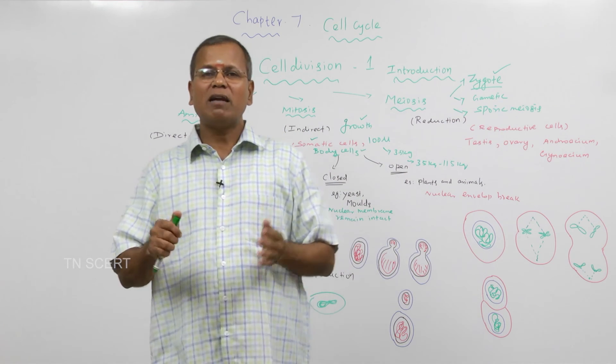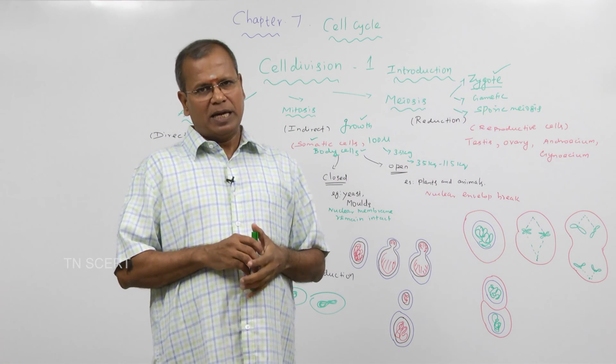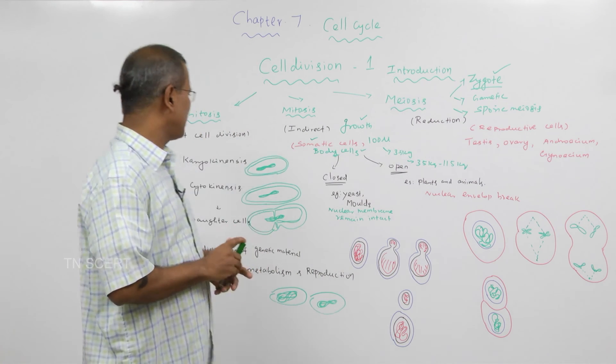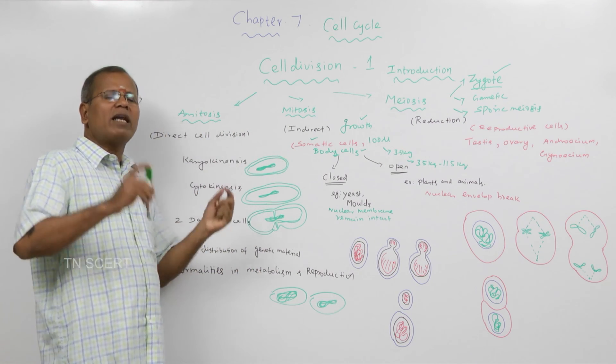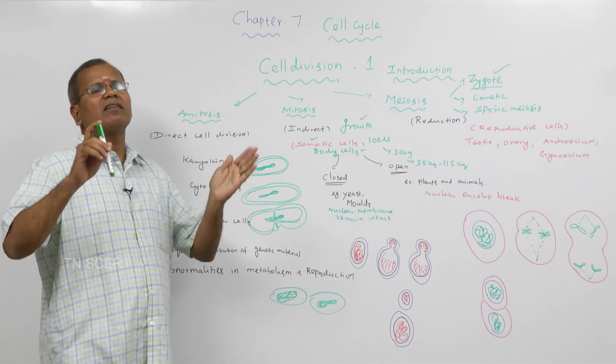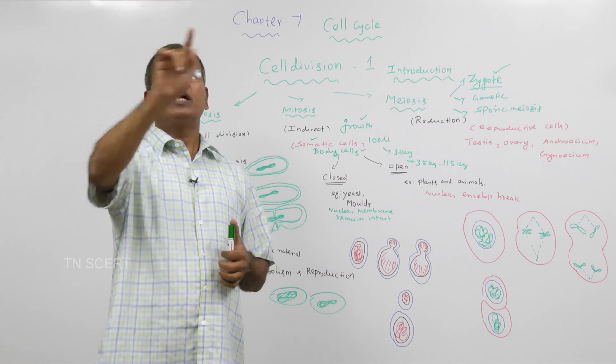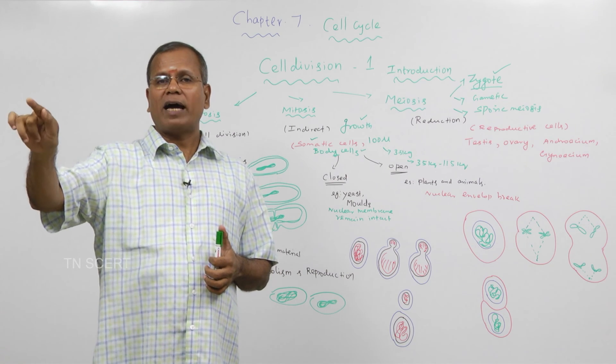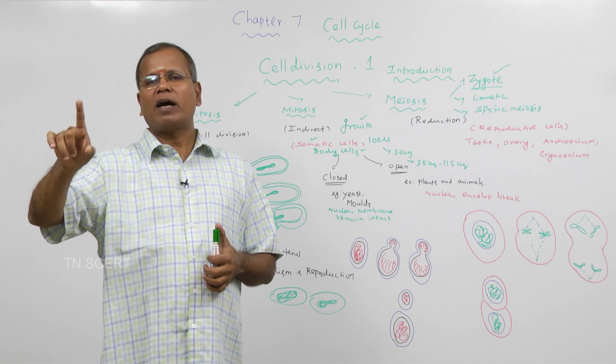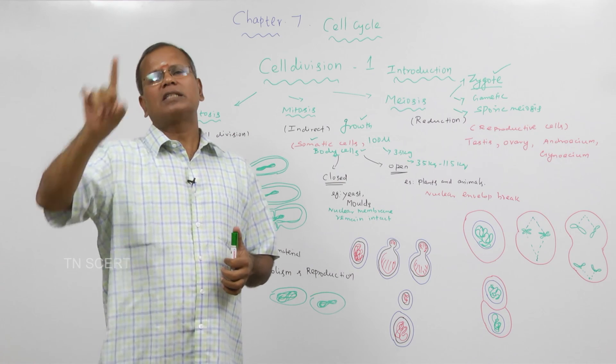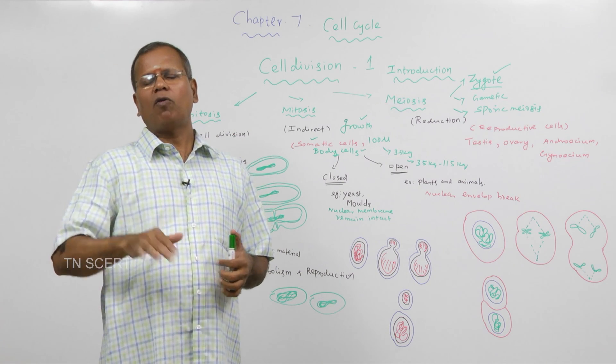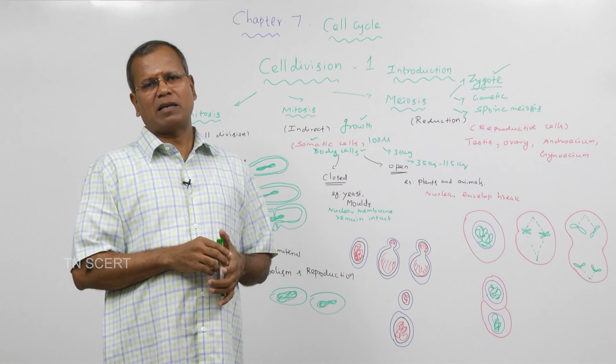This is what you have done with cell division. Adipaday is very important. One is karyokinesis, another is cytokinesis. Division of nucleus, karyokinesis. Division of cytoplasm, cytokinesis. Utkaru peridhal, karyokinesis. Cytoplasm, cytokinesis. This is manadil vajithu kollu. This is the next class. Thank you.